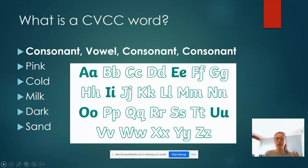So it's basically a word such as pink because P is a consonant, I is a vowel and then N is a consonant and K is a consonant. And it's just words like that that we're going to be really concentrating on over the next few weeks when we're doing this Phase 4 phonics.